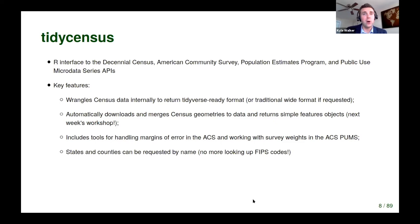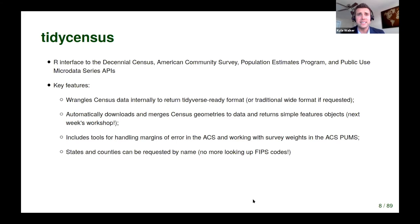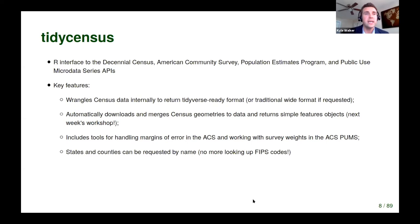TidyCensus tries to be fairly opinionated about how it gets you data — it does a lot of data wrangling under the hood. It makes a request to the API and formats that data specifically to help you work within the Tidyverse. If requested, you can download and merge Census geometries to your decennial census or ACS data, giving you back a simple features object. For those from a GIS background familiar with Tiger Line shapefiles and joining CSVs in ArcGIS — TidyCensus does all of that for you automatically.